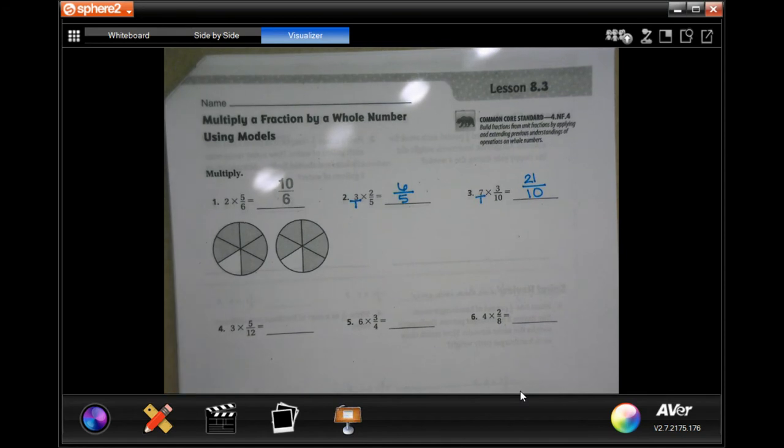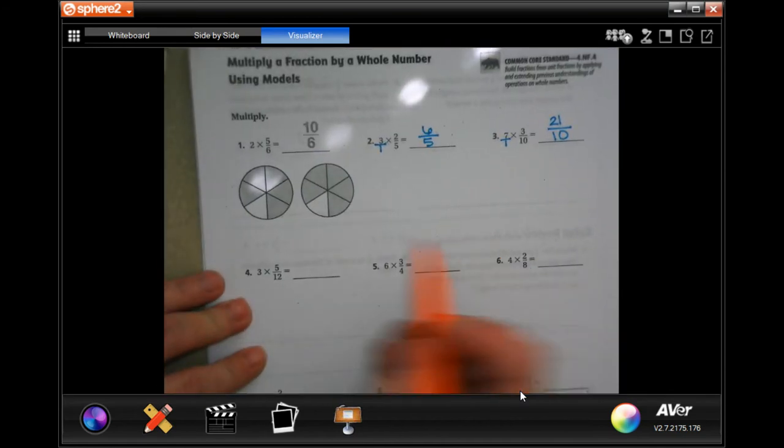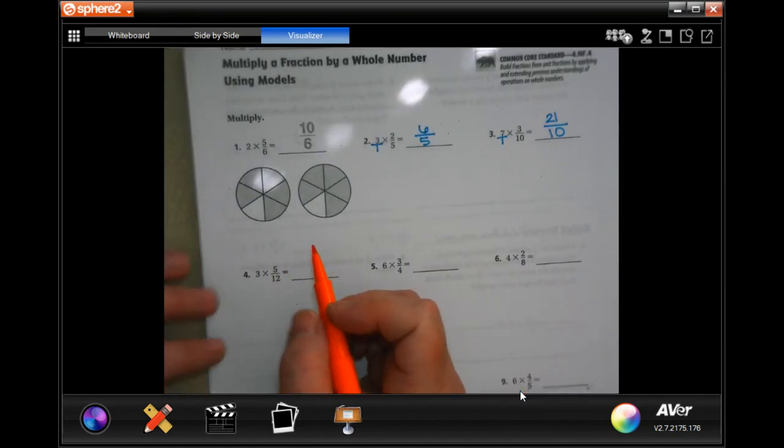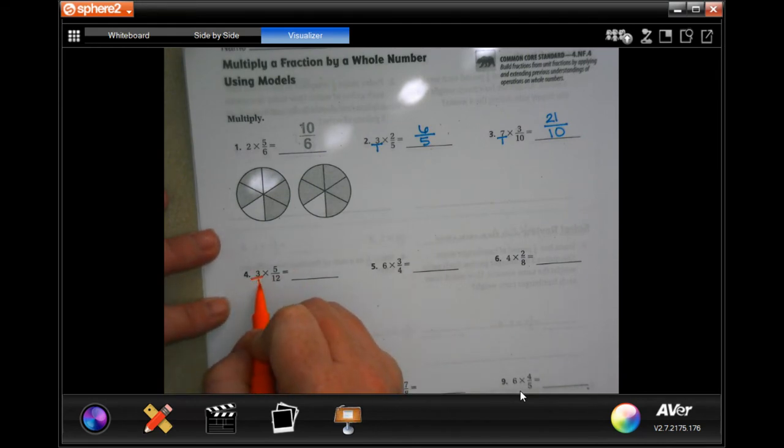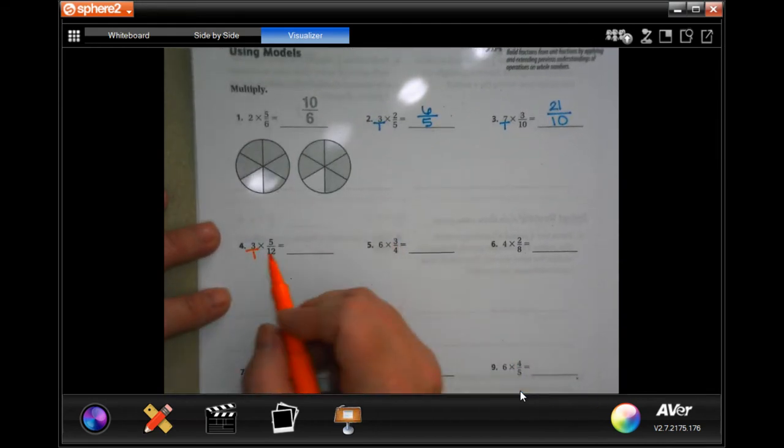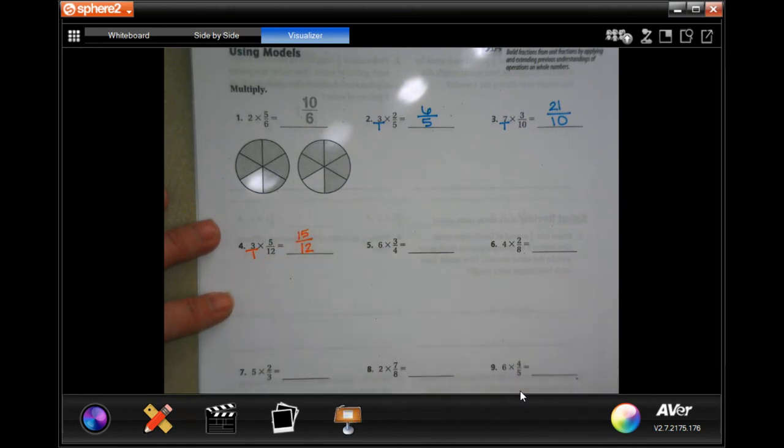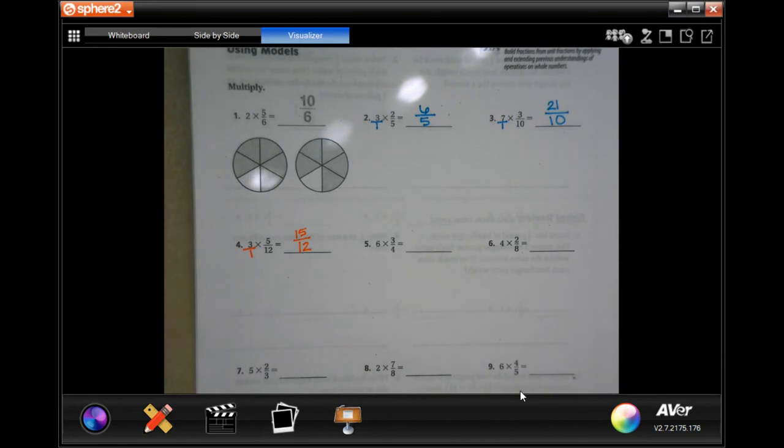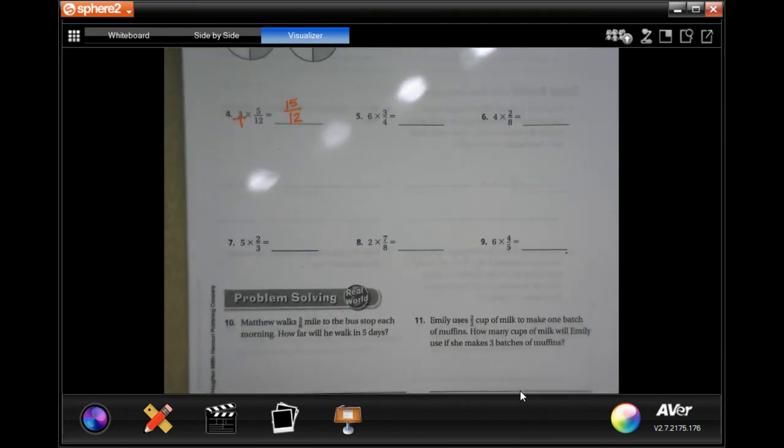I'm going to do one more and then I'm going to turn y'all loose. Three over one, same thing as three. Three times five, fifteen. One times twelve, twelve. Done. You guys finish their nine. You totally can.